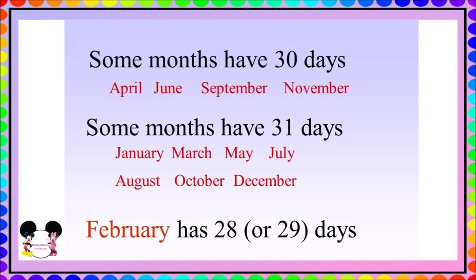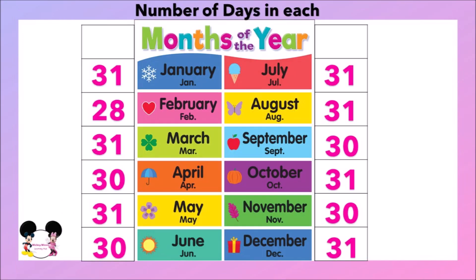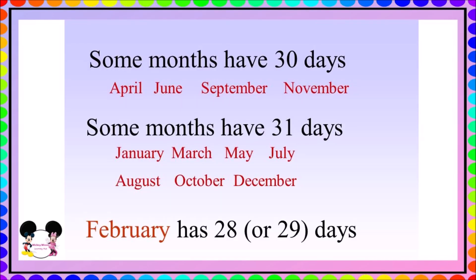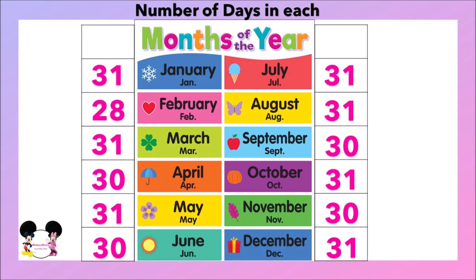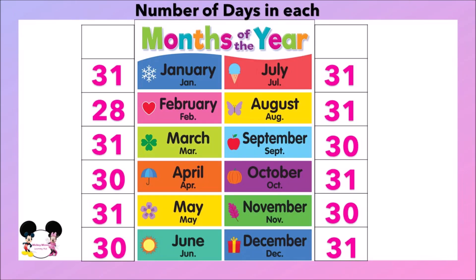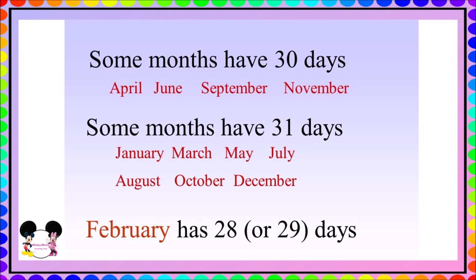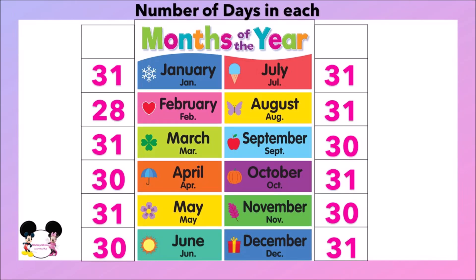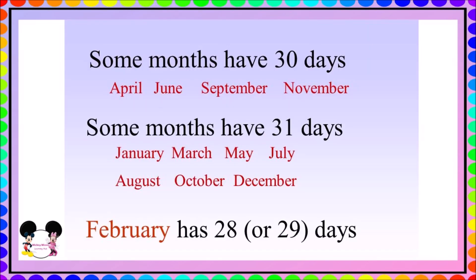So children, as we saw, some months have 30 days and only one month has 28 days. Months that are 30 days are April, June, September, and November. The months that are 31 days are January, March, May, July, August, October, and December. And the month that has 28 days is February.